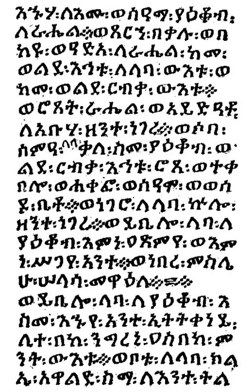As Daniels used the word, an Abugida is in contrast with a syllabary, where letters with shared consonants or vowels show no particular resemblance to one another, and also with an alphabet proper, where independent letters are used to denote both consonants and vowels.